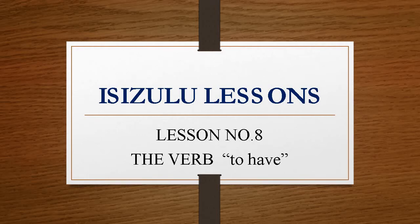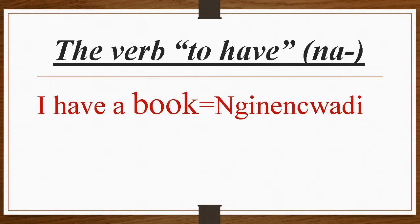Sanbanani, welcome to Code Switching again. This is lesson number 8 in Isuzu lessons. It's the continuation of lesson number 7. Today we'll be doing the verb to have.